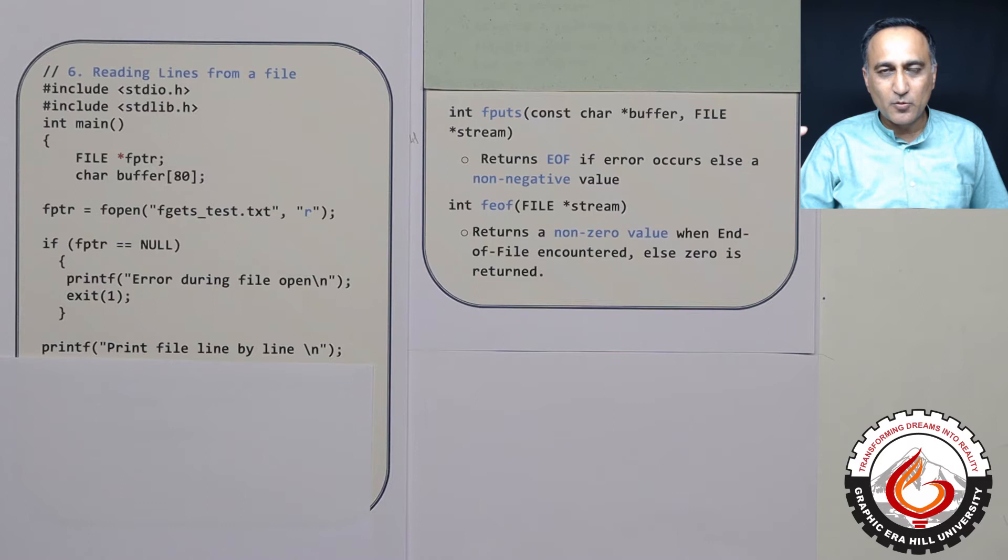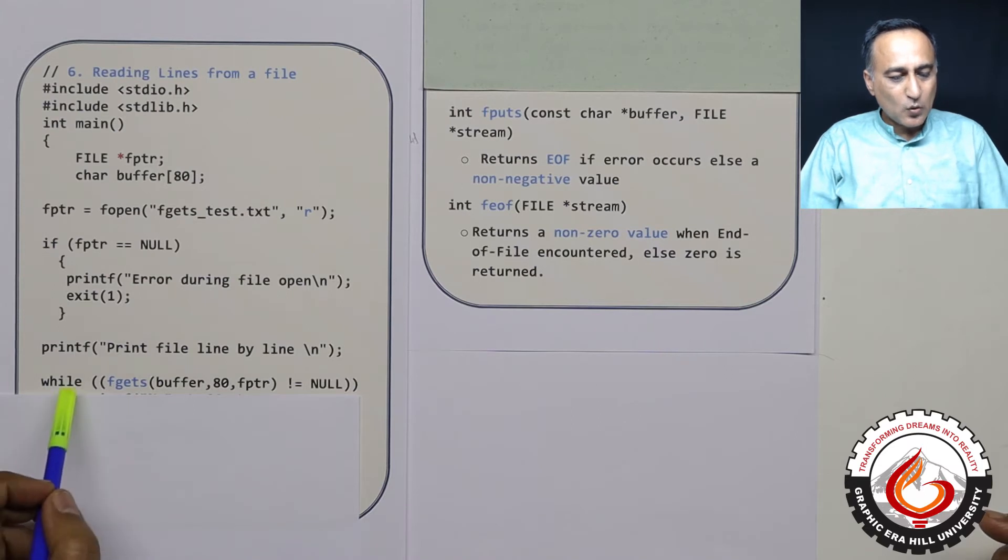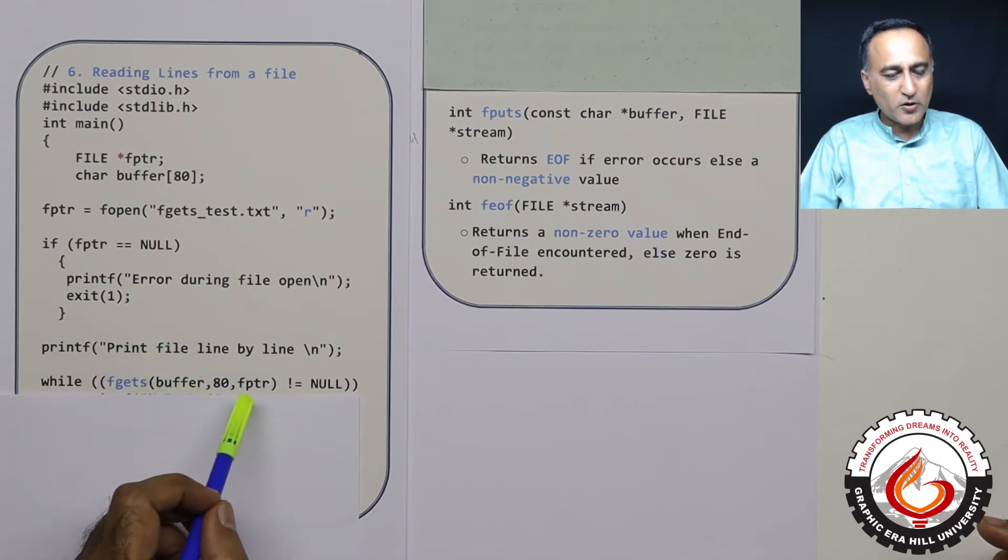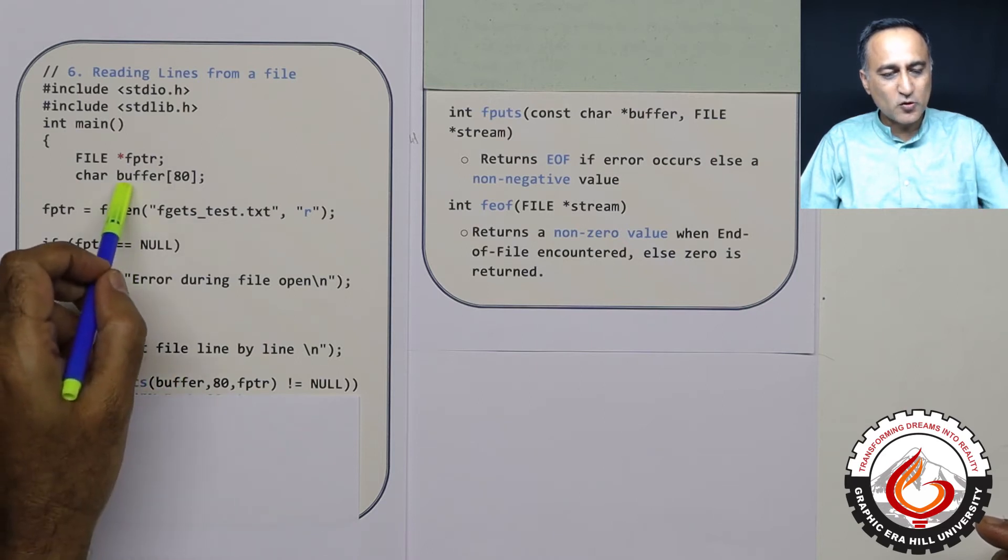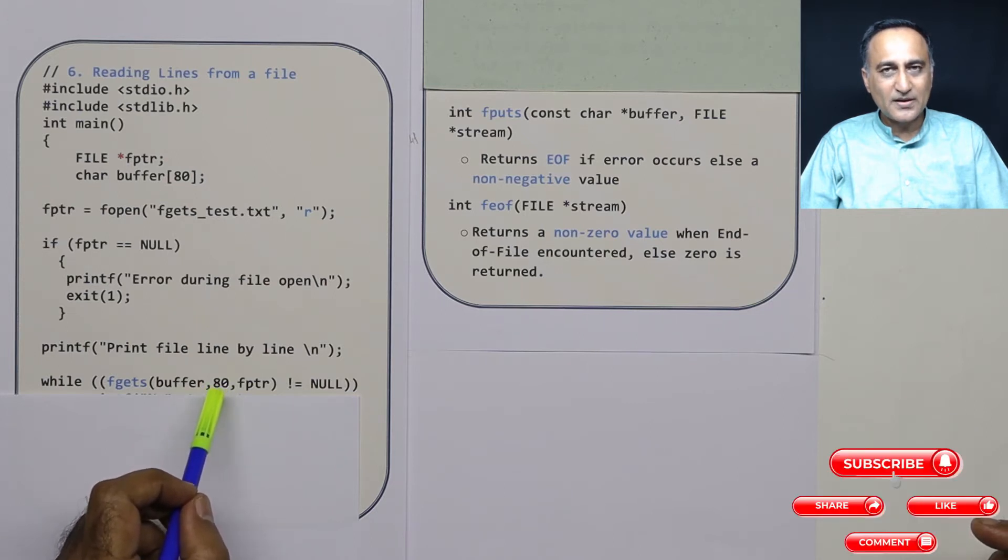So just look at how this fgets works. While fgets buffer, which happens to be whatever data is read, is going to be stored in this array. Maximum width of the line happens to be 79 characters because one character for the null character.